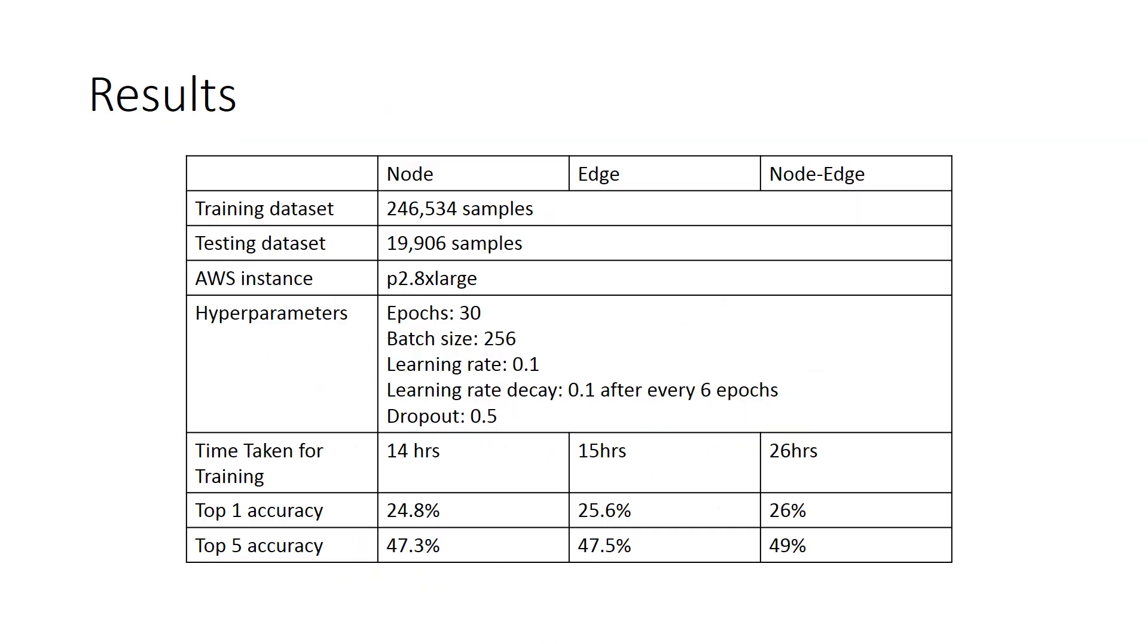These are the results obtained. The results are compared for node GCN, edge GCN and the hybrid model of combination of both node and edge. The total training data of 246k samples have been used. It has been tested on 19k samples. The AWS instance used is P2.8xlarge. The following hyperparameters have been used: the number of epochs is 30, batch size of 256, a learning rate of 0.1 and a dropout of 0.5.